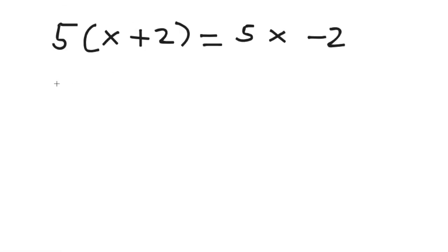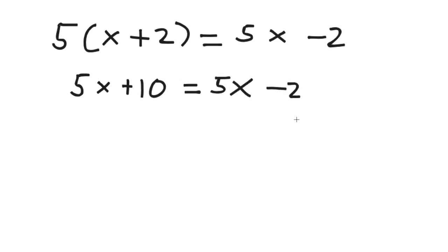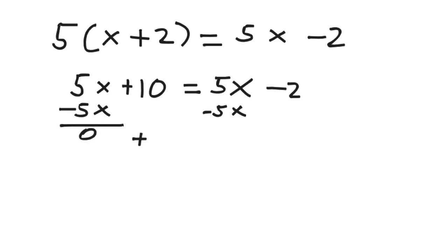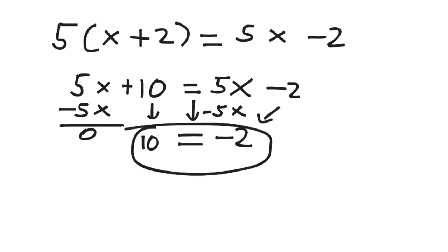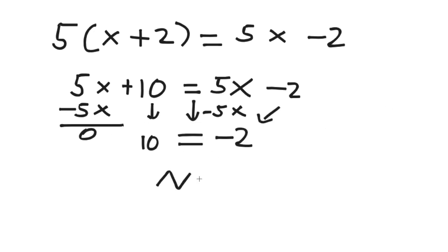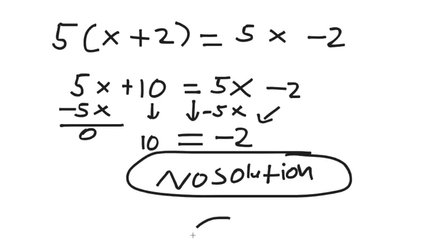Now let's do this example. We see parentheses, so let's distribute: 5x plus 10 equals 5x minus 2. From here, we subtract 5x from both sides. The variable goes away completely, and we're left with 10 equals negative 2. Since these are not equal to each other, this is called no solution. You can write it out or use the empty set symbol — they both mean the same thing.